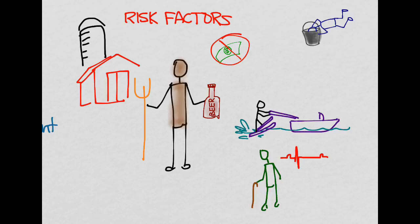Two other important risk groups to mention: first, those who have prolonged QTs, because cold water can further prolong the QT, causing dysrhythmias. The other group to worry about are those with epilepsy, because if they have a seizure while in the water — either swimming or even taking a bath — they can also drown.